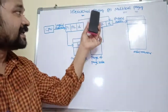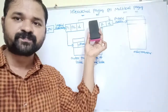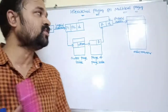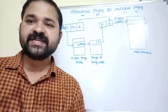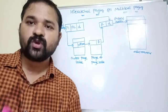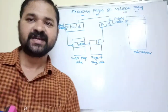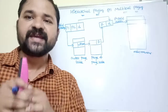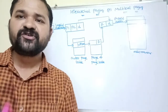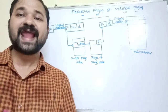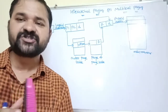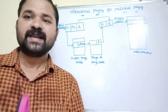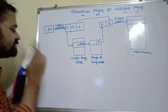Let's see about hierarchical paging, also known as hierarchical page table, multi-level paging, two-level paging, or three-level paging. First, let's see where we use hierarchical paging — we use it when we want to store lakhs of entries in a page table.